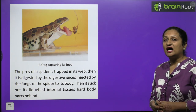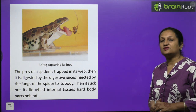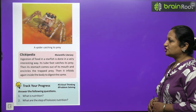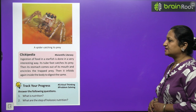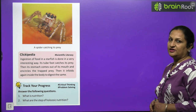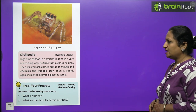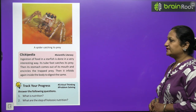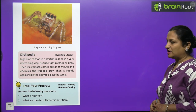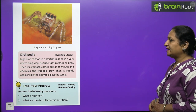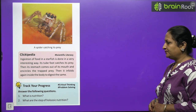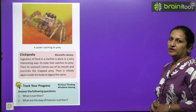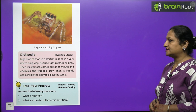Ingestion of food in a starfish is done in a very interesting way. Its tube feet catch its prey, then its stomach comes out of its mouth and encircles the trapped prey, and then unfolds back inside the body to digest it.